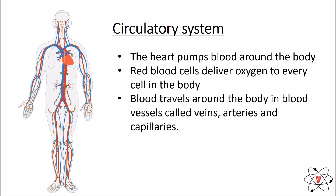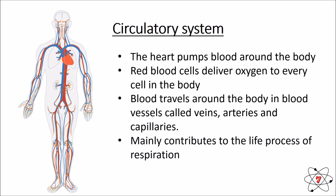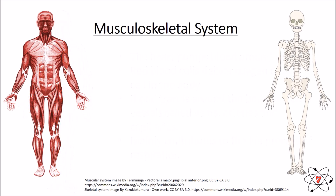Your blood travels around the body in blood vessels called veins, arteries, and capillaries. We can think of this like a road — your red blood cells are the cars. The veins and arteries are major roads; the capillaries are minor roads. The main life process our circulatory system contributes towards is respiration.